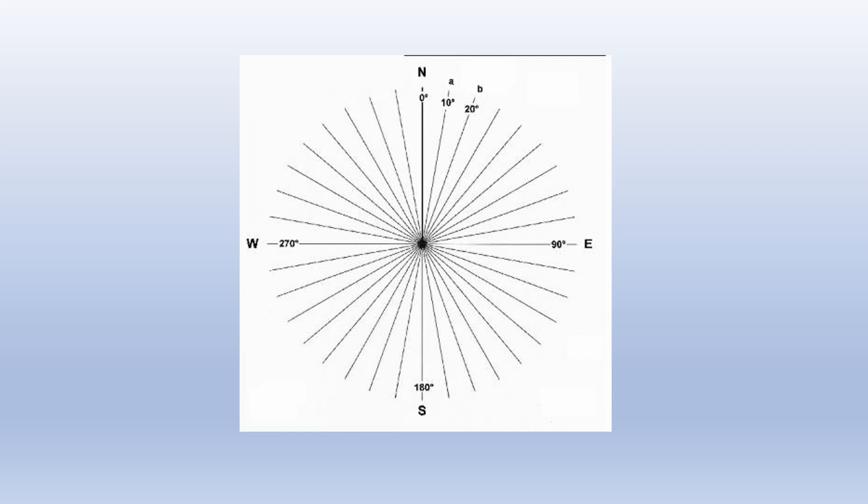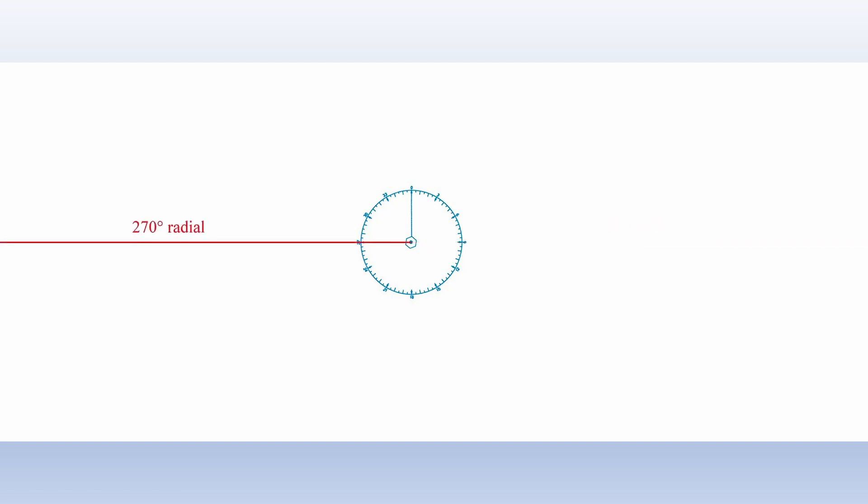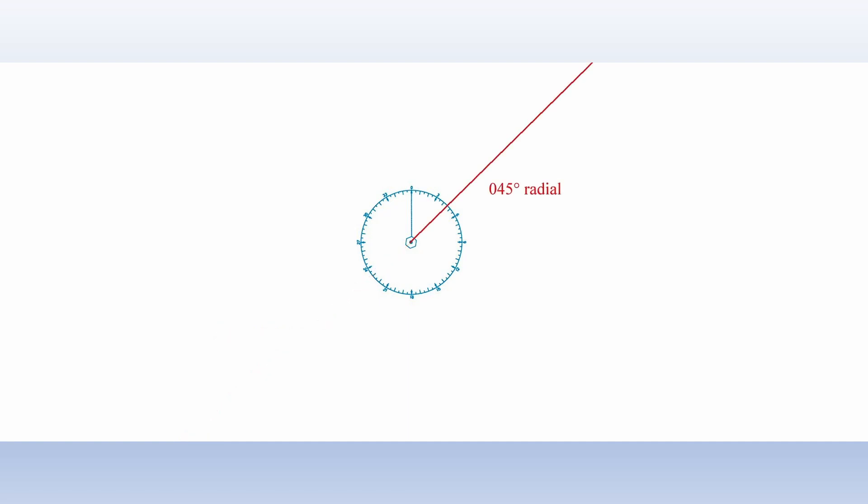VORs are radio stations that send out 360 radio beams, called radials, that radiate out from the VOR like a fan in all directions. The radials are numbered based on the direction they travel away from the station. For example, the 090 degree radial is to the east of the station, whereas the 270 degree radial travels west. The 230 radial is southwest, while the 045 degree radial is to the northeast. A pilot can use these radials to determine their position relative to that station, navigate to that station, or navigate on a specific radial to or from that station.